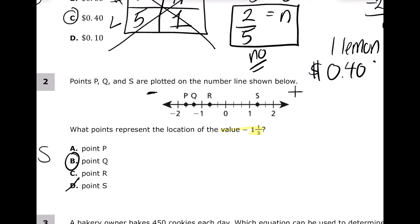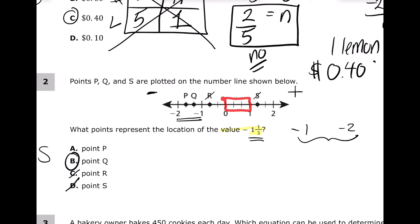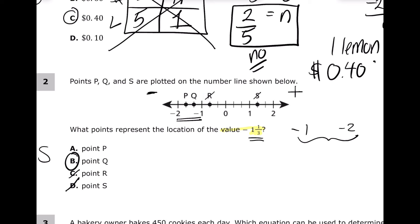Negative one and one-third will be between negative one and negative two, so R is also not correct. I look at how many pieces the number line is cut into — they're thirds. Counting left from zero: negative one-third, negative two-thirds, negative three-thirds (negative one), and then negative one and one-third. There it is — the answer is Q.